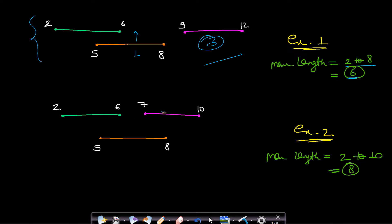In the second example, there is a gap between the first and third line segments, but they can be joined if we move a line segment up. Using these three line segments, the maximum length of a continuous line that can be formed is from 2 to 10, which equals 8. I hope you understood the question.